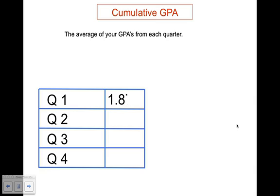In quarter one, in our example, we got a 1.875. So after the first quarter, that is also our cumulative GPA. Our GPA and cumulative GPA are the same.